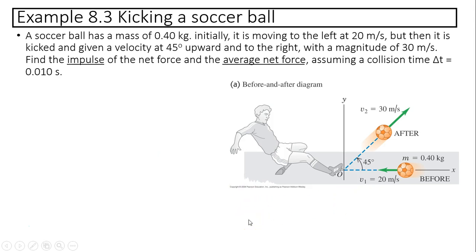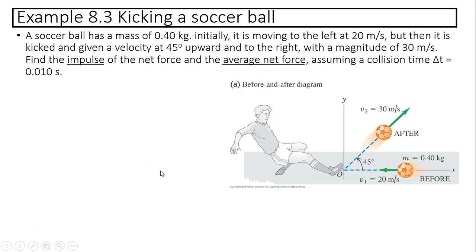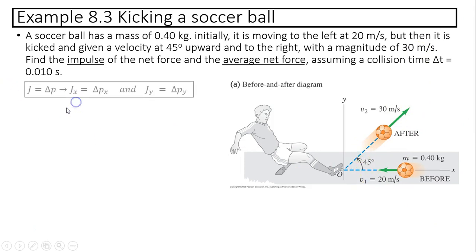Another example: a soccer ball has mass 0.4 kg, initially moving to the left at 20 m/s (vi equals negative 20 m/s). It is then kicked and given a velocity of 30 m/s at 45 degrees upward to the right. Find the impulse of the net force and the average net force, assuming collision time is 0.01 seconds. Remember both impulse and momentum are vector quantities, so we must use vector rules.